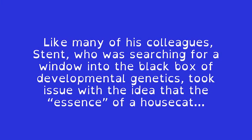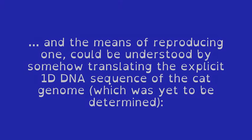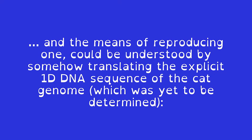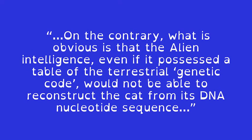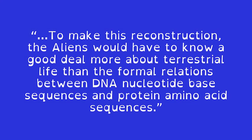Like many of his colleagues, Stent, who was searching for a window into the black box of developmental genetics, took issue with the idea that the essence of a house cat and the means of reproducing one could be understood by somehow translating the explicit 1D DNA sequence of the cat genome, which was yet to be determined. On the contrary, what is obvious is that the alien intelligence, even if it possessed a table of the terrestrial genetic code, would not be able to reconstruct the cat from its DNA nucleotide sequence. To make this reconstruction, the aliens would have to know a good deal more about terrestrial life than the formal relations between DNA nucleotide base sequences and protein amino acid sequences.